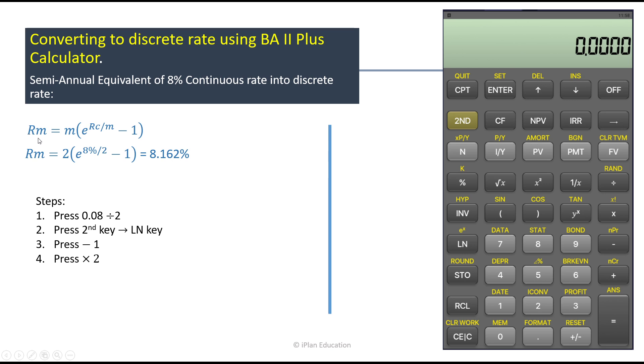So for that we can simply convert that using this formula. We are using the discrete rate equals to Rm, where Rm is discrete rate equals to the frequency or number of times compounded per year, and then we multiply it with the exponential raised to the power continuous rate of compounding divided by frequency or number of times per year compounded minus 1. So if we solve it, we get the value that is 8.162 percent.